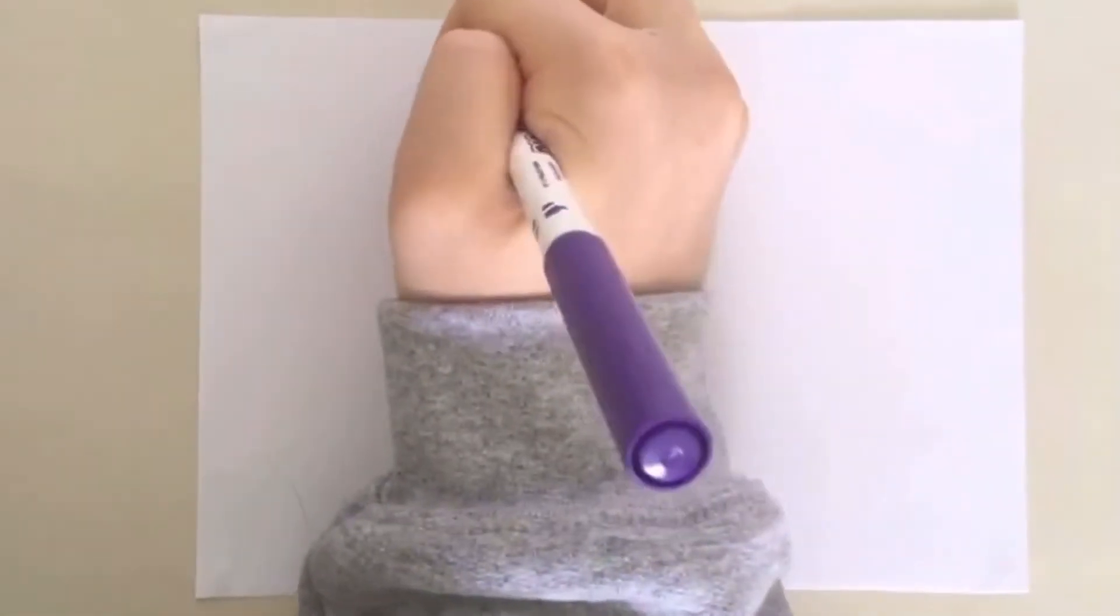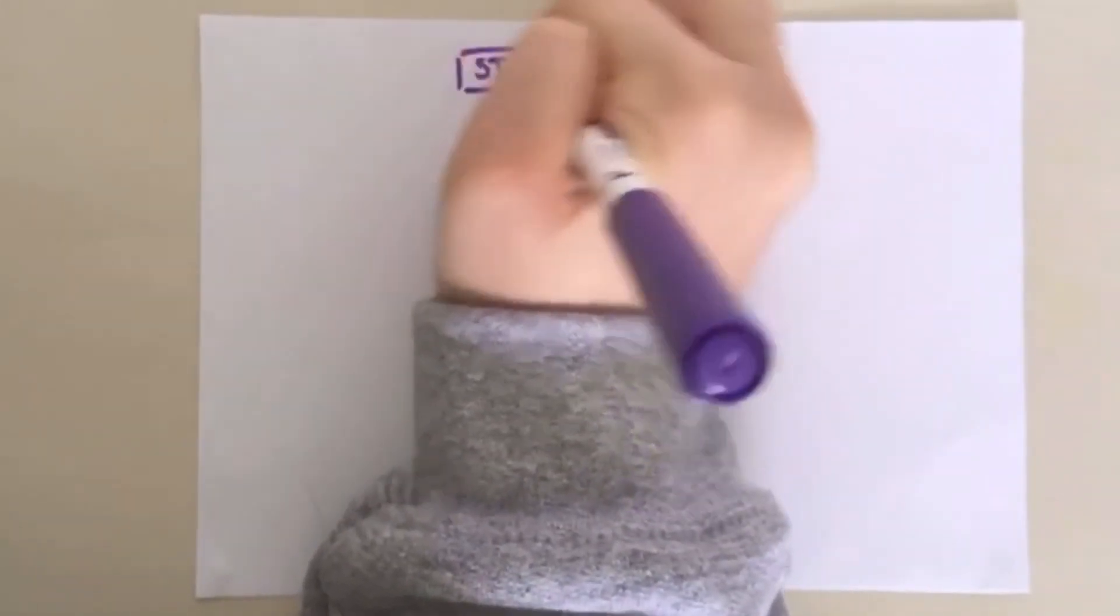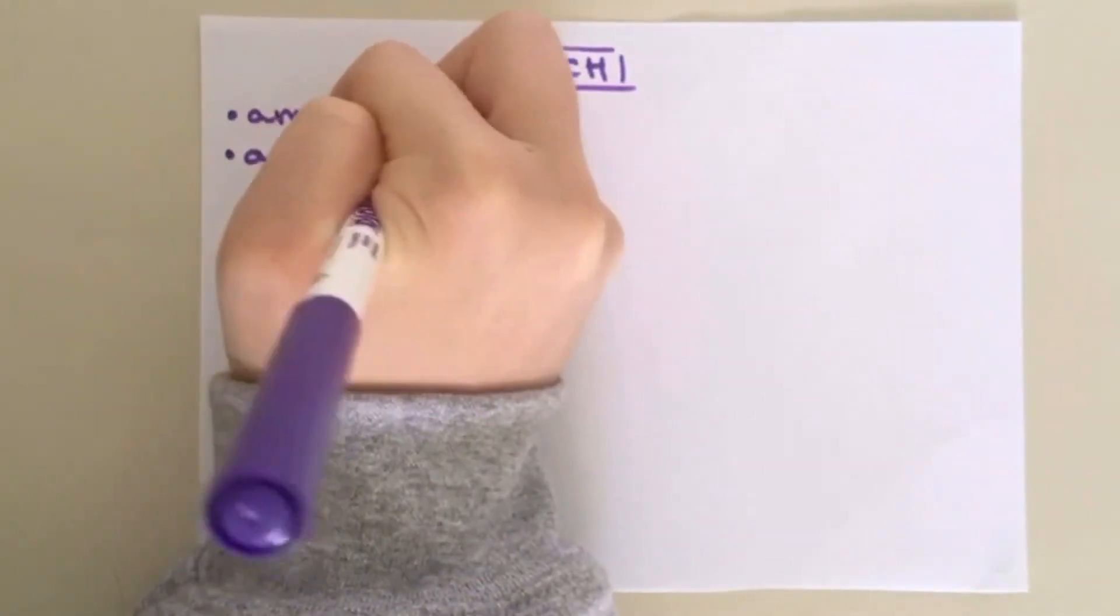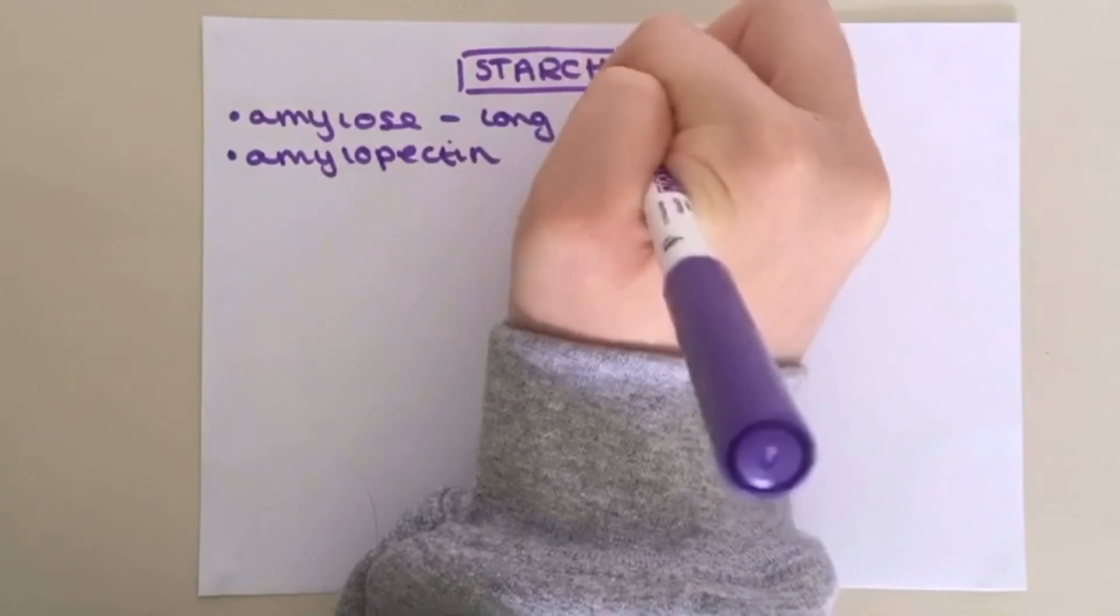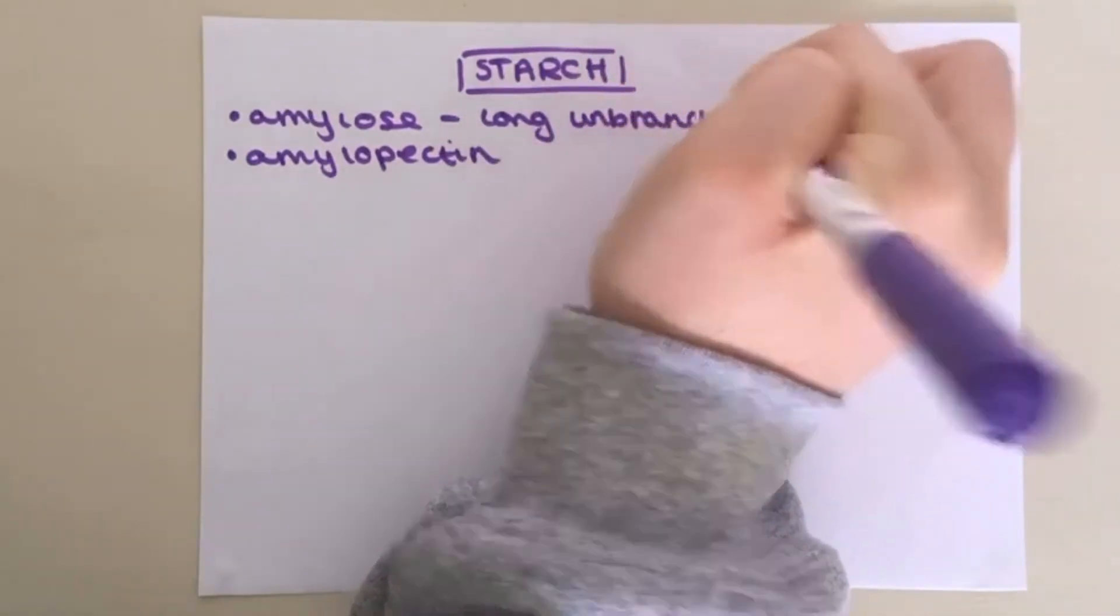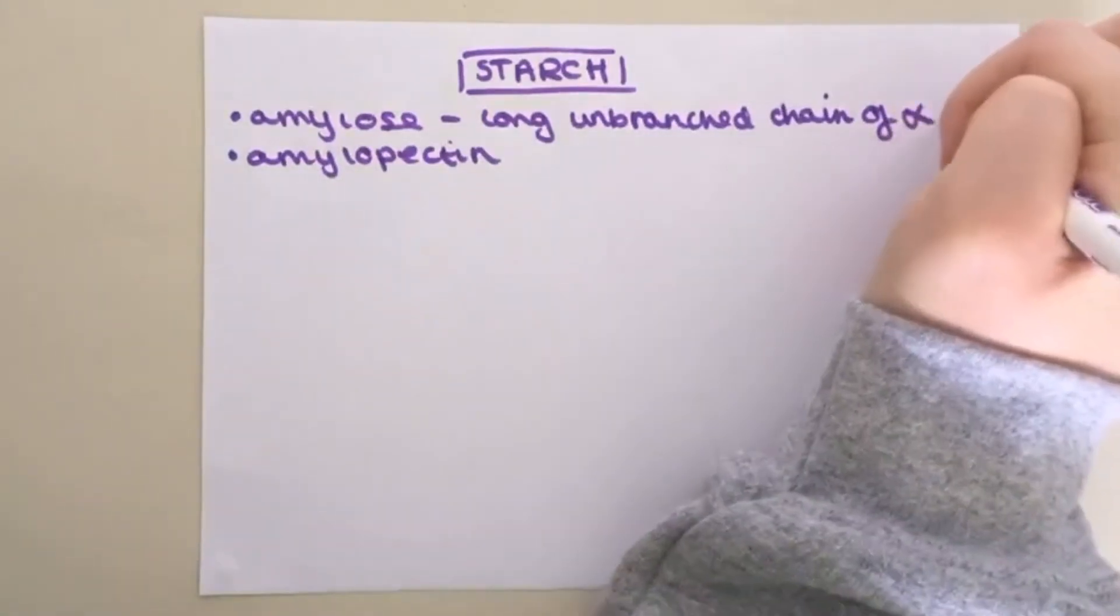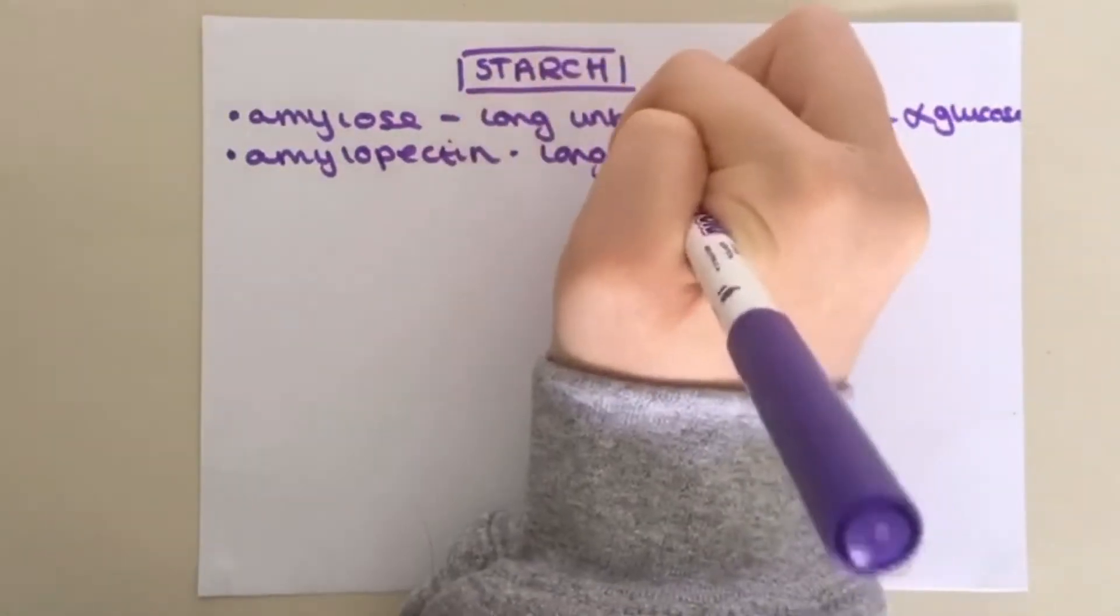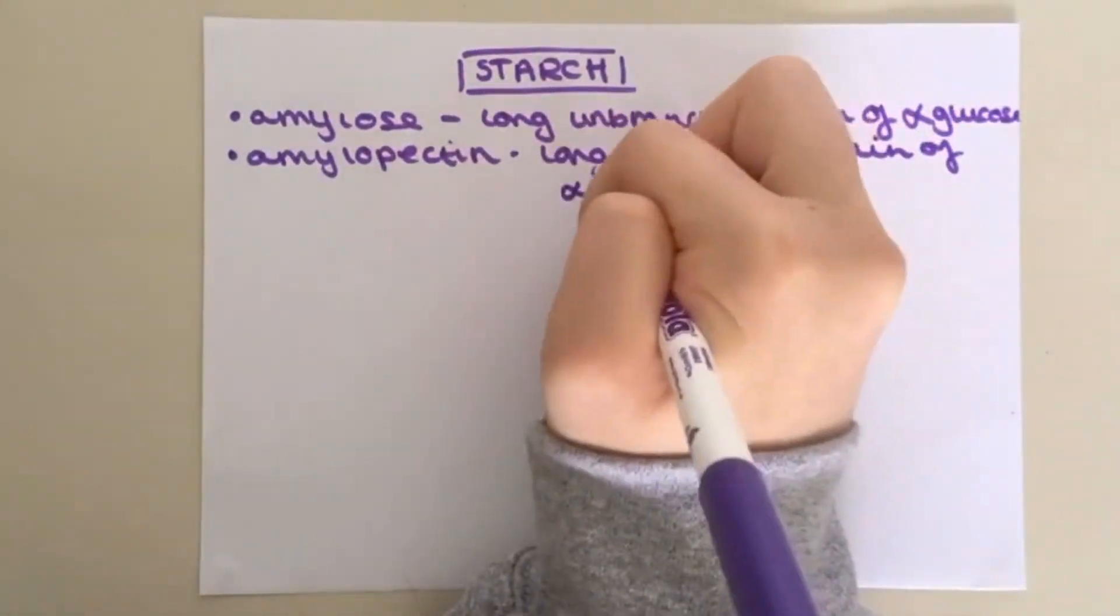Polysaccharides are carbohydrates formed when more than two monosaccharides join. Now we will look at some of the most important polysaccharides in biology, starting with starch. Starch is formed from two different polysaccharide chains, amylose and amylopectin. Amylose is a long unbranched chain of alpha-glucose with a coiled structure almost like a cylinder caused by the angles of the glycosidic bonds. Amylopectin is a long branched chain of alpha-glucose that fits inside the amylose helix.